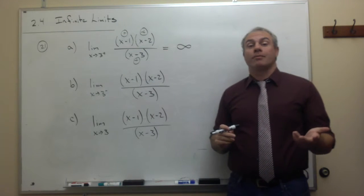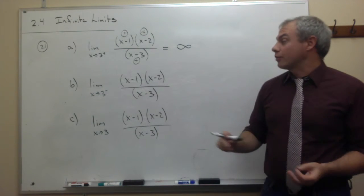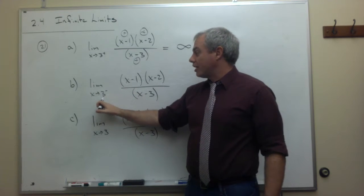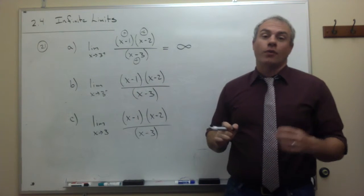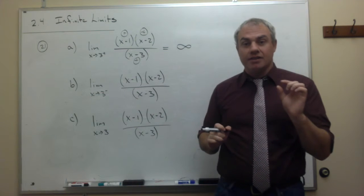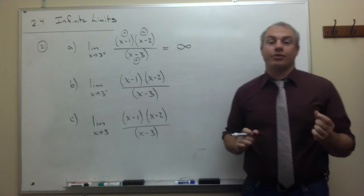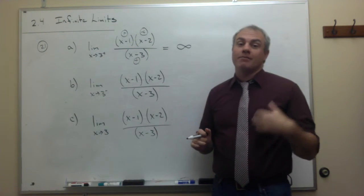Okay, let's look at part B in a similar way. This time, we're coming at 3 from the left side. So, we want to take something just slightly smaller than the value 3. So, maybe 2.9, maybe 2.99, just something slightly smaller than 3.